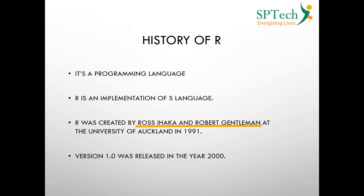Ross Ihaka and Robert Gentleman did extensive research on the S language, brought in modifications, and called it R at the University of Auckland in the year 1991. It took around nine to ten years for them to produce the first implementation of R, versioned as 1.0, which was released in the year 2000.